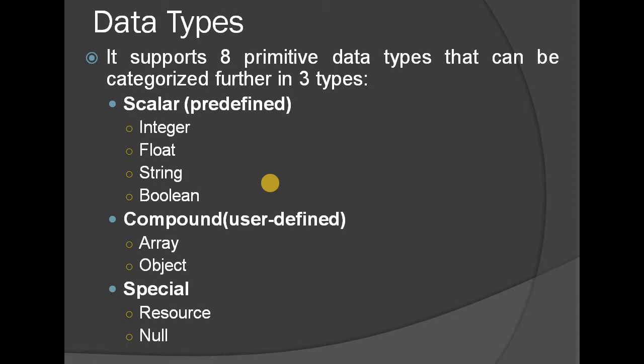There are 8 primitive data types in PHP, and they can be categorized into 3 types: scalar or predefined, compound or user-defined, and special type.